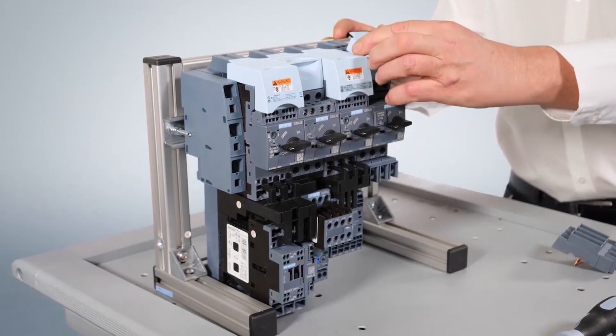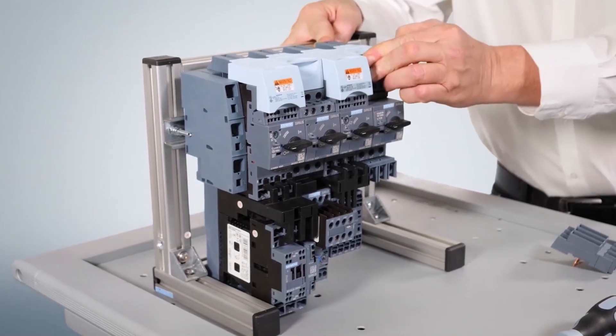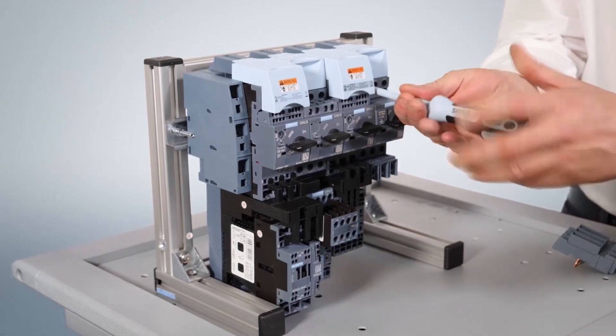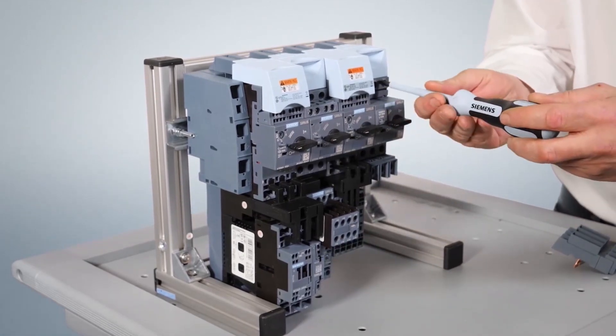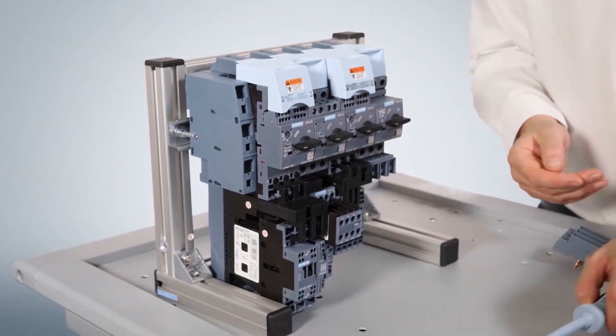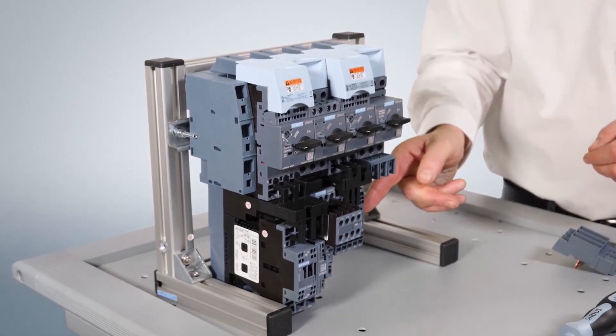Finally, insert the corresponding plug-in connector on top of the circuit breaker and tighten the screws. Now, you can connect the conductors to the load below the circuit breaker.